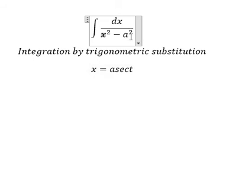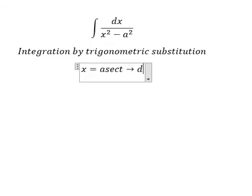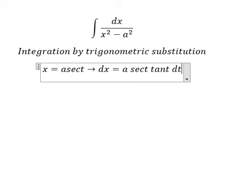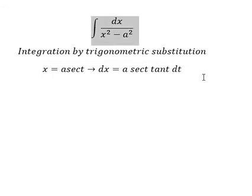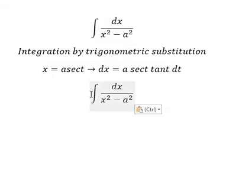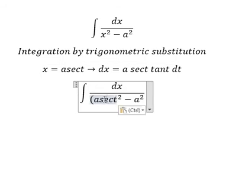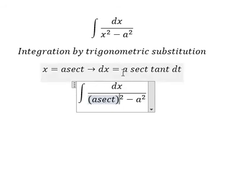We will change this to tan² t, and then we simplify by dx. If we take the derivative of both sides, you get a sec t tan t dt. So we put this in here. The x we change for this.